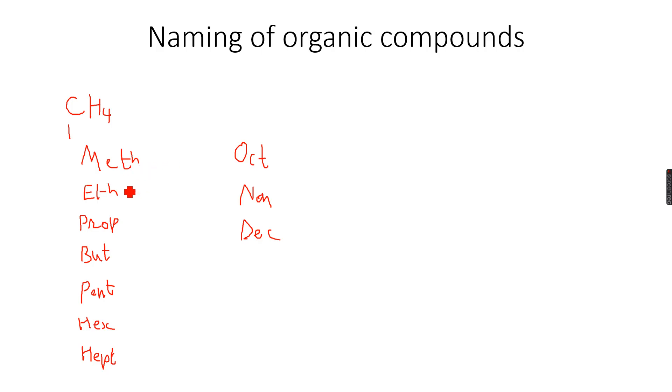So if we have one carbon atom, meth; two carbon atoms, eth, and so on. This is how we name an organic compound. You can see that this had one carbon atom, so the name will start with meth. Now, how do we come to the second part of the name? Because I said the name of this compound is methane.